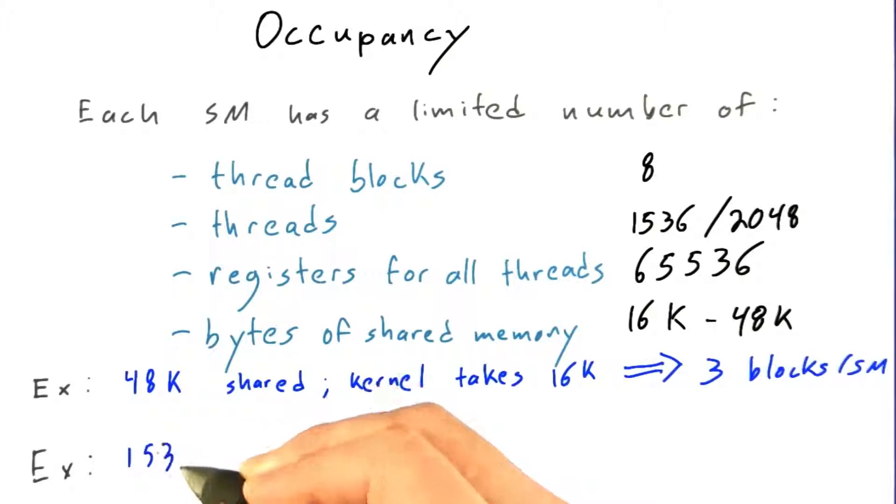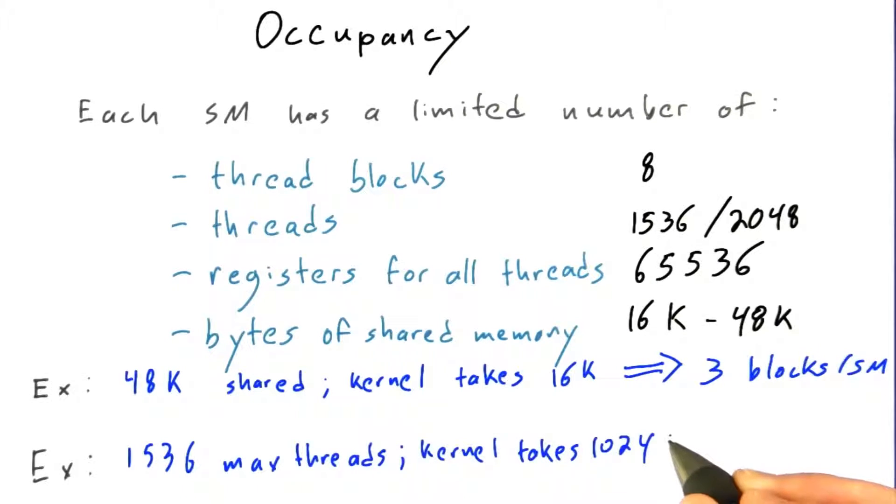Now, if that same GPU has a maximum number of threads of 1,536, but my kernel takes 1,024 threads, then I can only run one block per SM. So in this case, even though my kernel took little enough shared memory that I'd be able to get three blocks per SM, the sheer number of threads in my kernel is preventing me from running more than one block per SM.